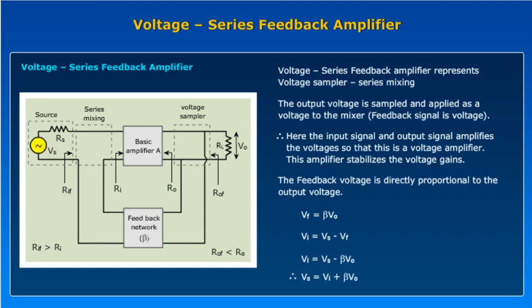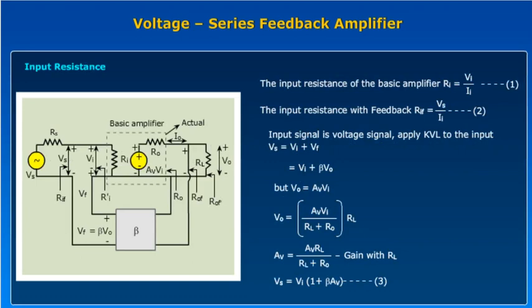The feedback voltage is directly proportional to the output voltage. The output voltage coming from the feedback network VF is equal to beta into V0. The input is equal to Vs, the signal source minus your feedback signal Vf. Therefore the total signal source Vs is equal to Vi plus beta V0. This figure shows that the basic amplifier is the voltage amplifier, replaced with its Thevenin's equivalent.